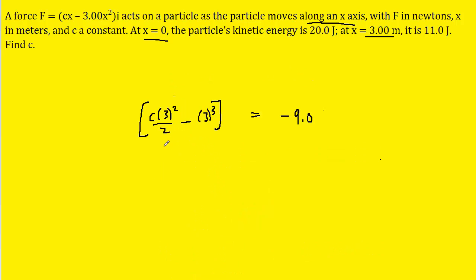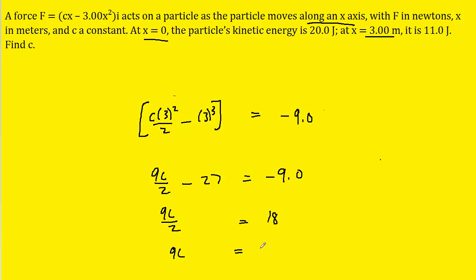Simplifying the left-hand side, we have 9c over 2 minus 27 equals negative 9. We add 27 to both sides to get 18, then multiply both sides by 2 to give us 36 on the right. Finally, dividing both sides by 9, we find that c equals 4.